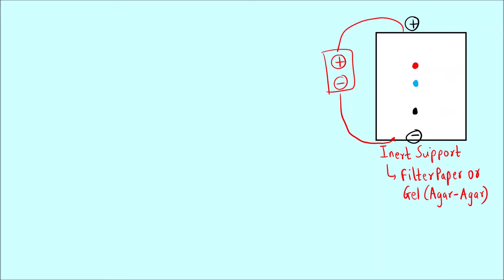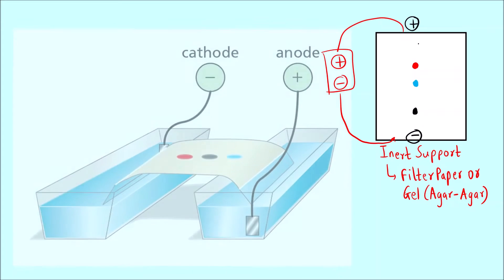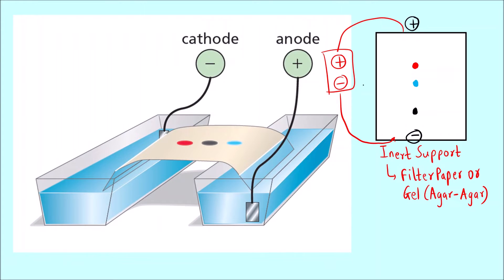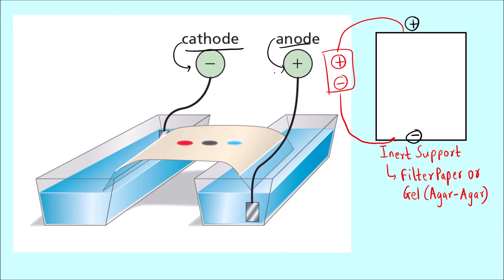One spot will be closer to a positively charged electrode and another closer to a negatively charged electrode. In this setup, one electrode is the cathode which is negatively charged, and the anode is positively charged. When the electric field is applied, all three amino acids are separated based on their charges.